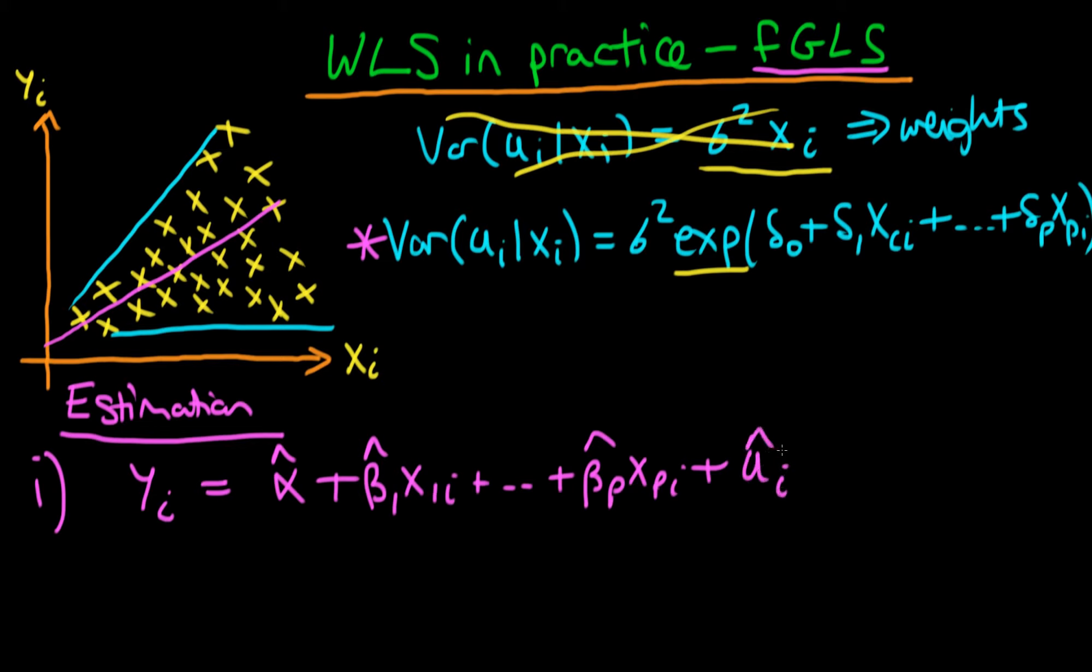The second step is to then run a regression of the log of these estimated errors. It's not just the log of the estimated errors, it's the log of the estimated errors squared. We run a regression of that on the various x variables, so that's delta 0 plus delta 1 times x1i all the way through to delta p times xpi.